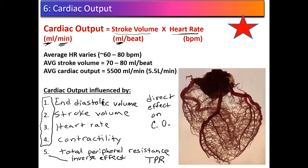On a test question, if stroke volume increases, cardiac output goes up. If end diastolic volume decreases, cardiac output goes down. Everything except TPR has a direct proportional relationship — if they go up, cardiac output goes up; if they go down, cardiac output goes down. However, if total peripheral resistance goes up, cardiac output goes down, and vice versa. Just remember: everything except TPR is direct proportional — only TPR arrows go in opposite directions.